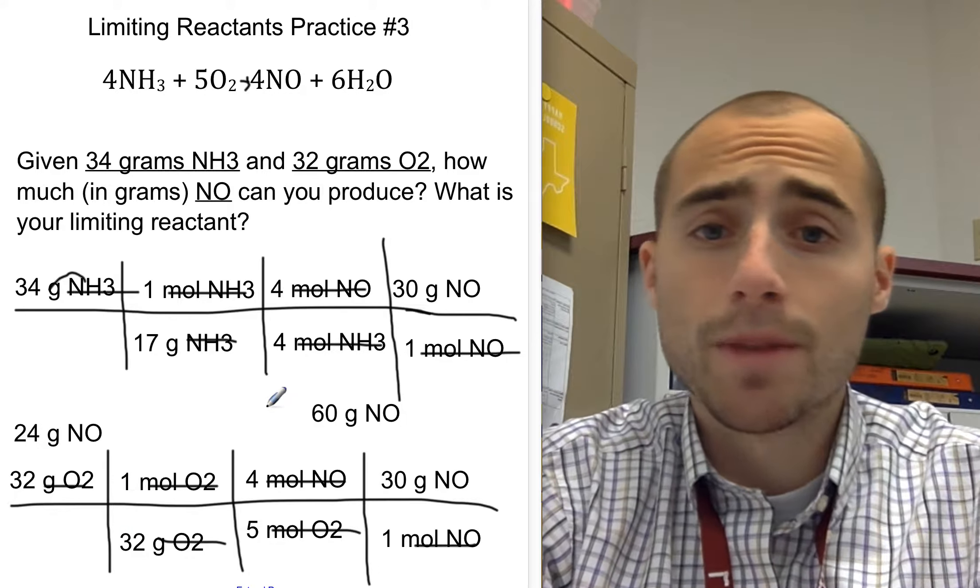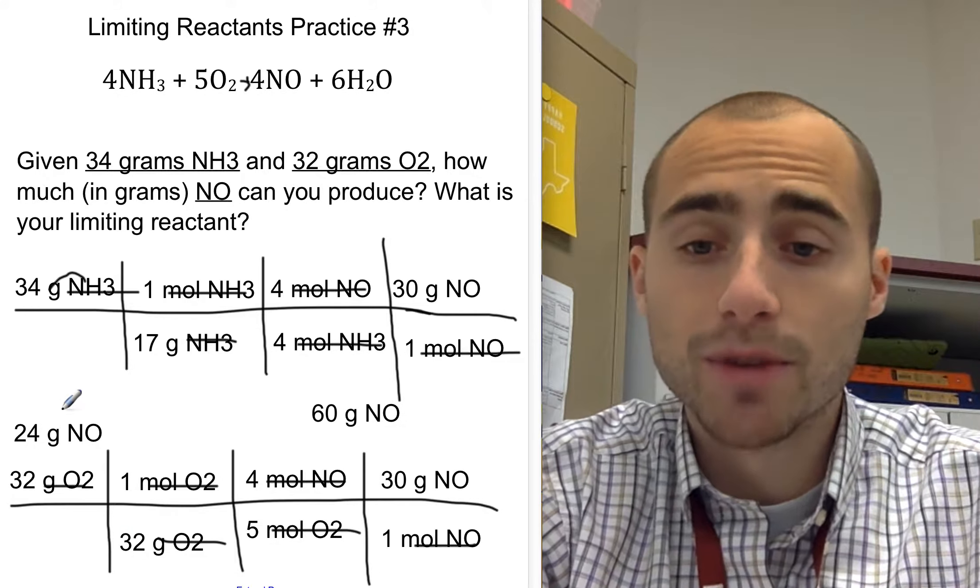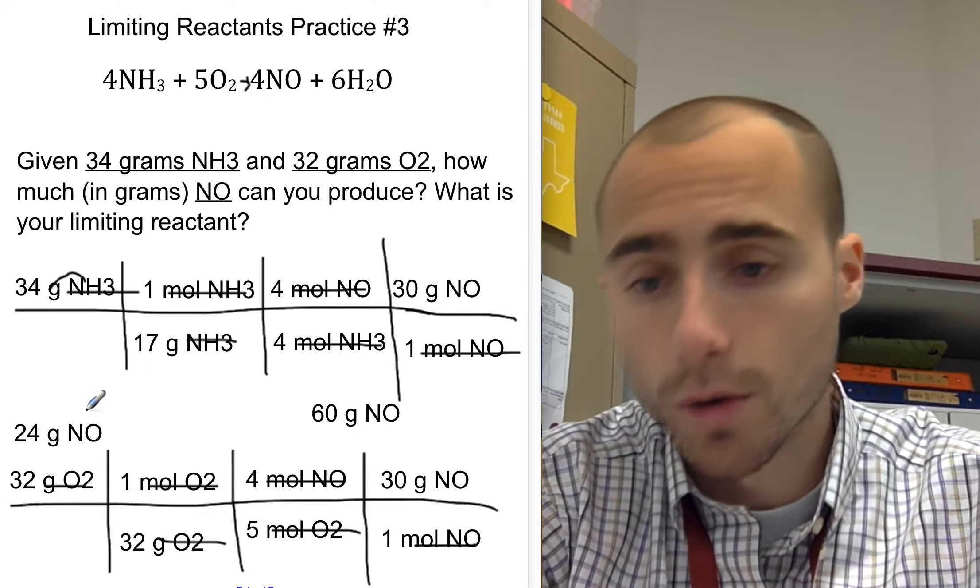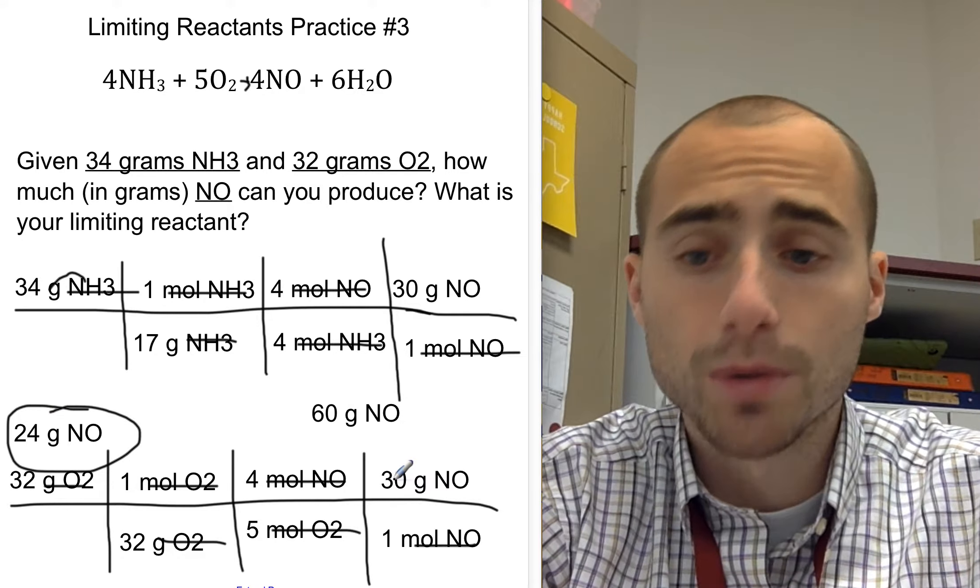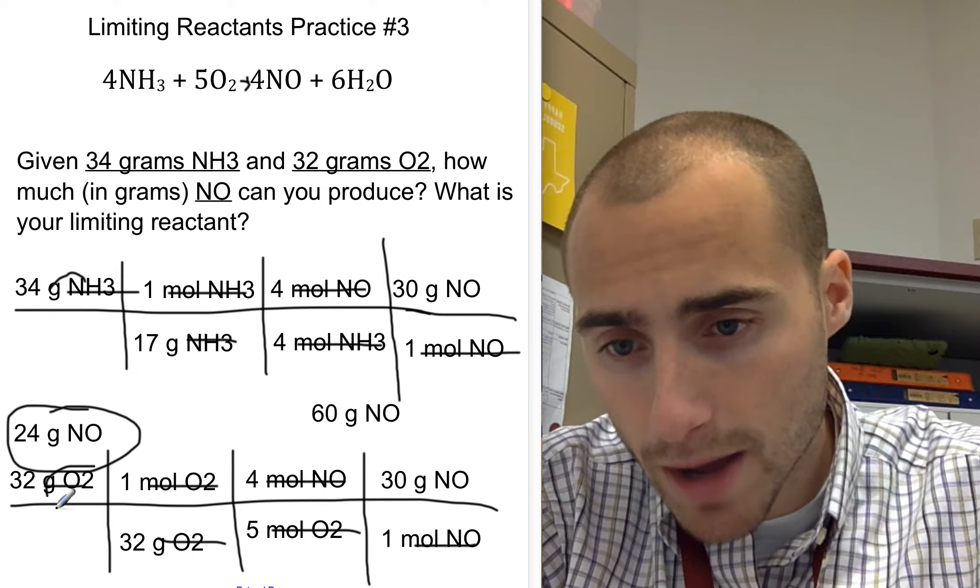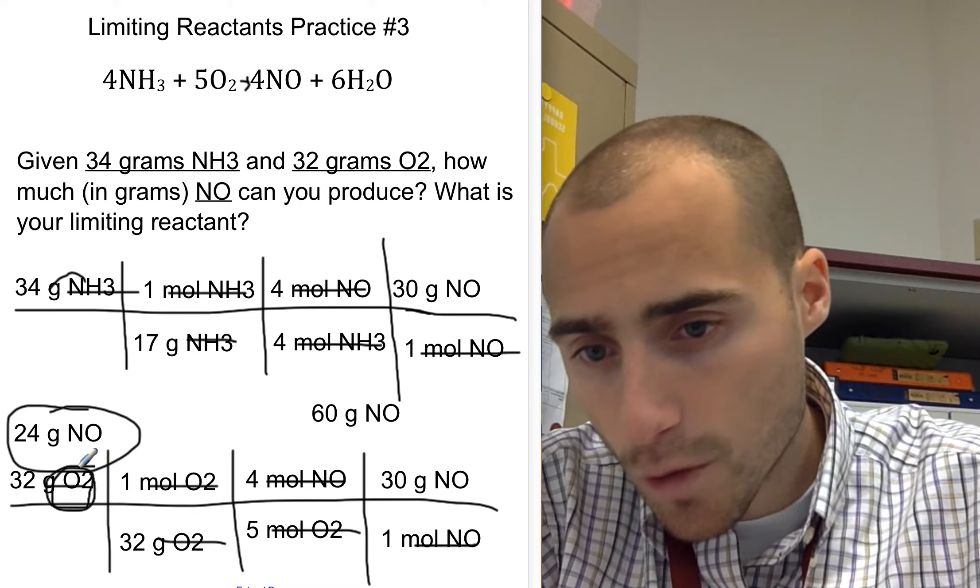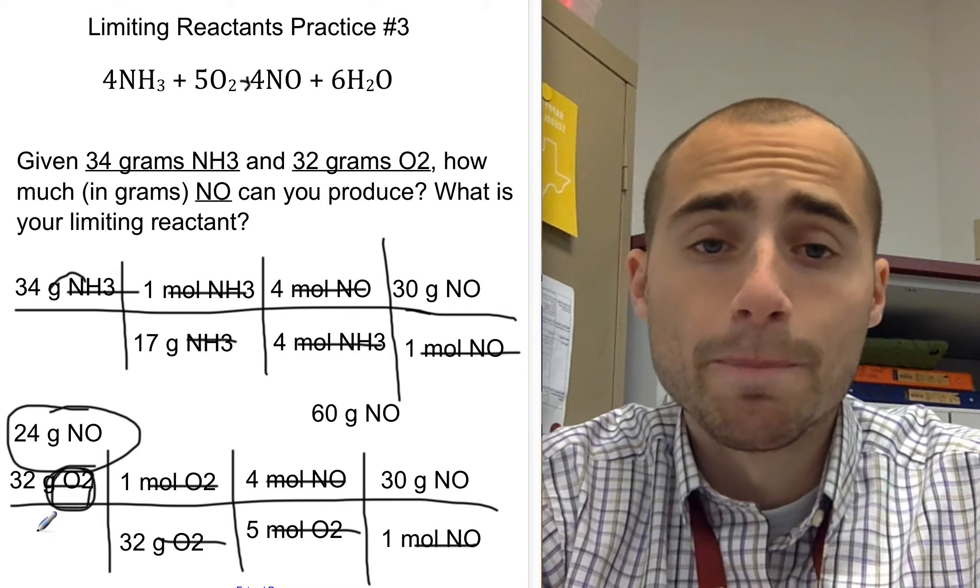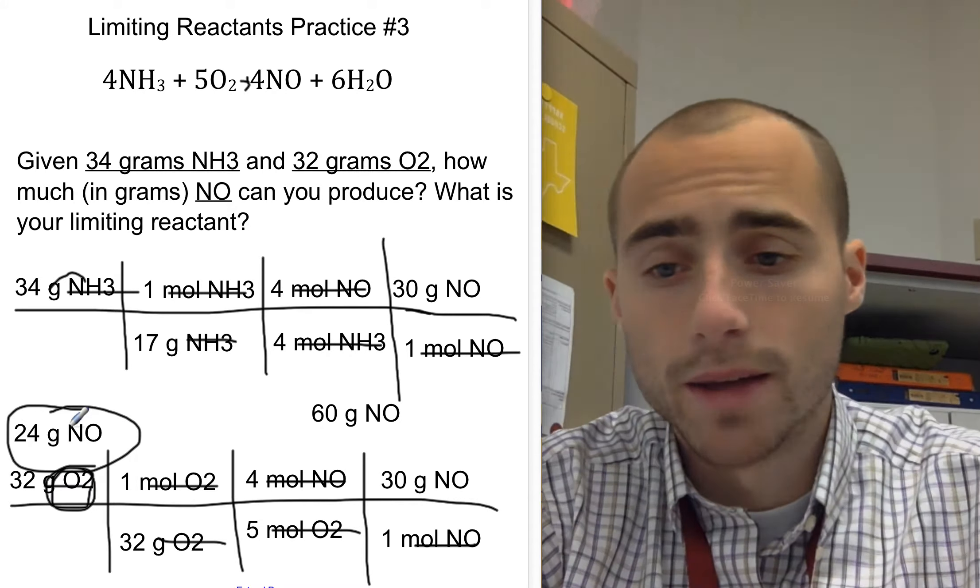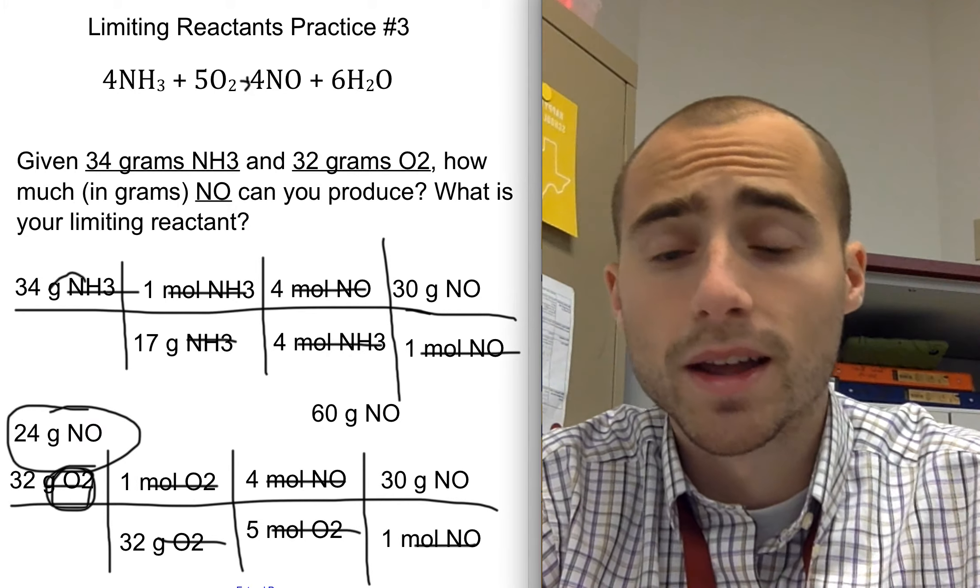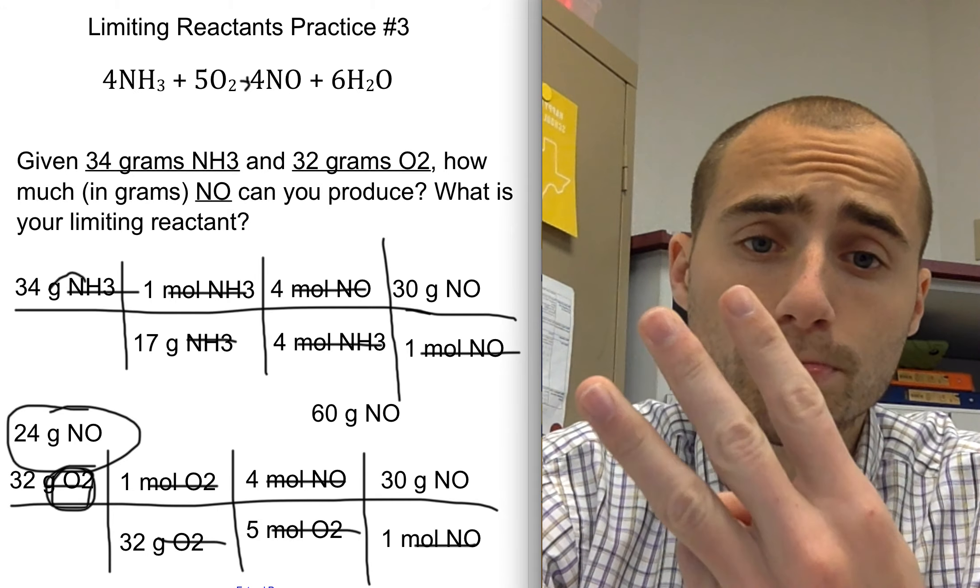So my next step is to determine which is the limiting reactant and how much was actually produced. Well, we always go to the lower number. 24 grams of nitrogen monoxide is produced and that was produced by my oxygen. Therefore, my O2 is my limiting reactant and it produced 24 grams of nitrogen monoxide. So that is practice problem number three.